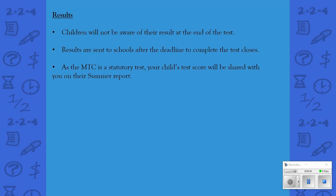When the children have completed the test, they won't be aware of their result. Those results are sent to schools once the deadline to complete the test has closed. Because this is a statutory test, we have to report your child's test score to you and we'll do this usually on the summer report that you'll get before your child leaves Year 4.